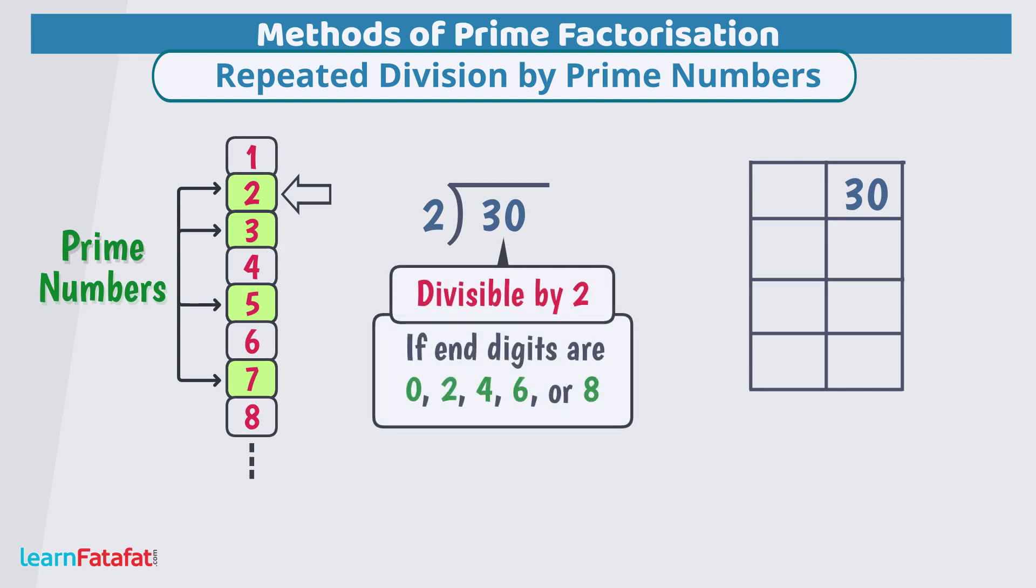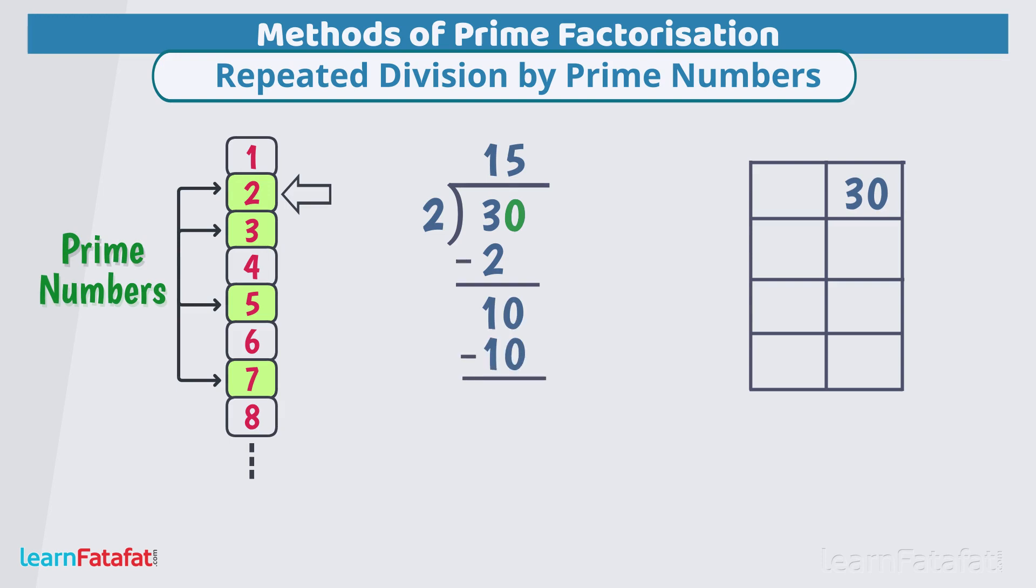Here test for divisibilities will be very useful. Since this number has 0 at units place, so it is exactly divisible by 2. Let's divide it. The quotient is 15. We will write 2 here and the quotient 15 below the original number.